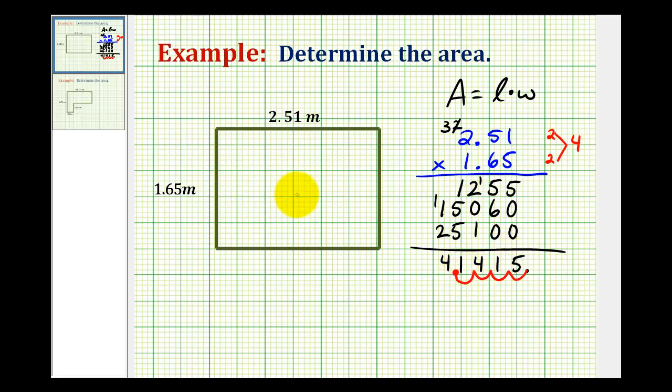Which would be the area of our rectangle. So our area is equal to 4.1415, which would be 4 and 1,415 ten thousandths. And because we're multiplying meters times meters, the units would be meters squared. So this tells us that just over 4 square meters would fit inside this rectangle.